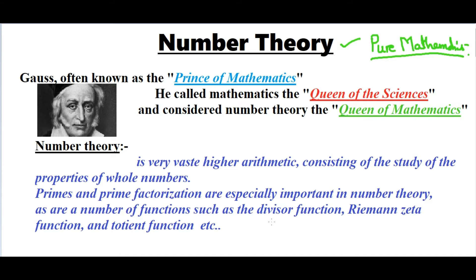So first let me tell you what number theory is all about. It is a very vast field — higher mathematics. People generally refer to it as arithmetic, but in terms of higher studies it is called higher arithmetic. It usually consists of whole numbers, natural numbers, primes, prime factorization, and very important functions such as the divisor function, Euler's totient function, and the Riemann zeta function — a very important function which I will explain in another video as it is a very large topic. Psi function, divisor function, coprime functions, number of divisors functions — these types of functions are defined in number theory.